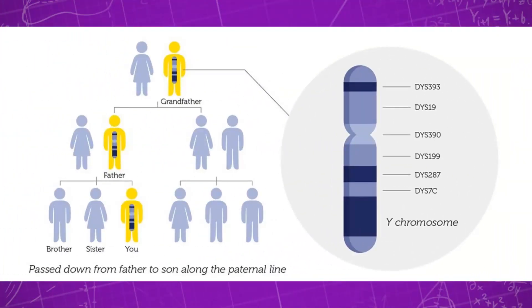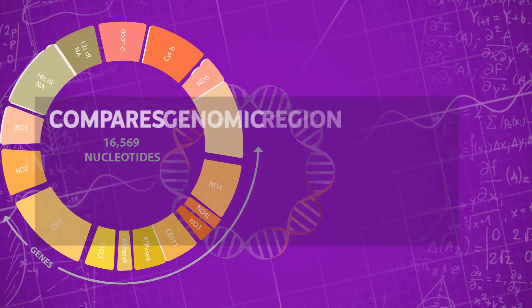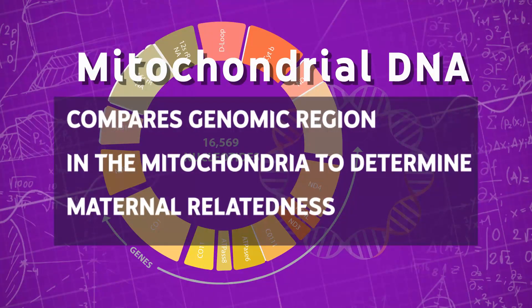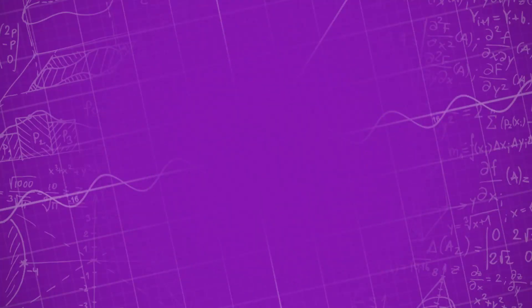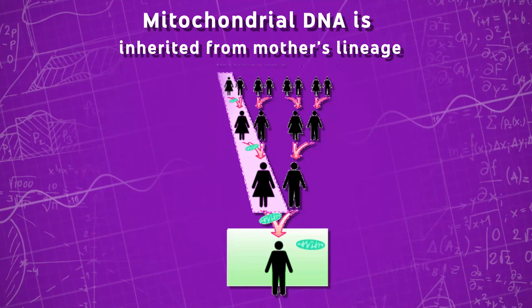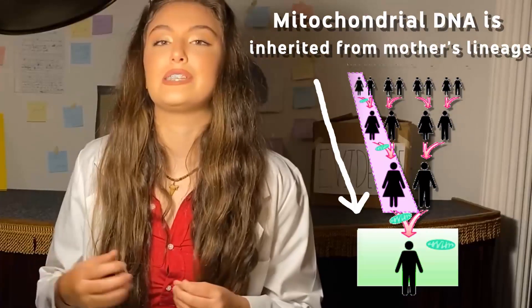For male DNA samples only, YSTR compares parts of the genes located on the Y chromosome that are identical among all paternally related males, but highly variable among the larger population group. However, mitochondrial DNA compares genomic regions in the mitochondria to determine maternal relatedness. Since mitochondrial DNA is passed down the mother's lineage, everyone sharing a common maternal lineage will have identical mitochondrial DNA profiles.